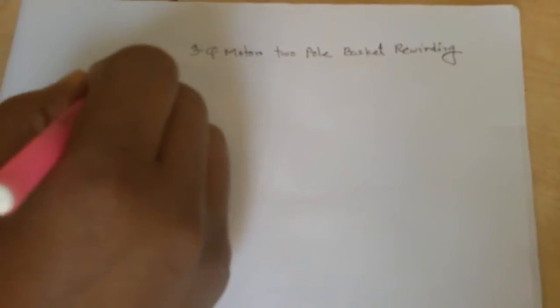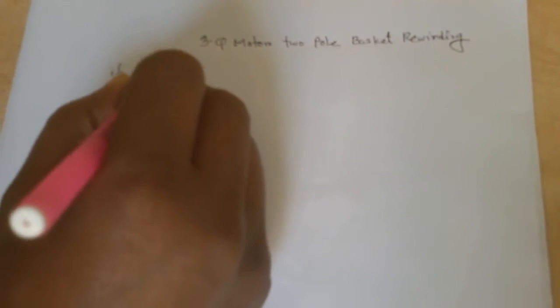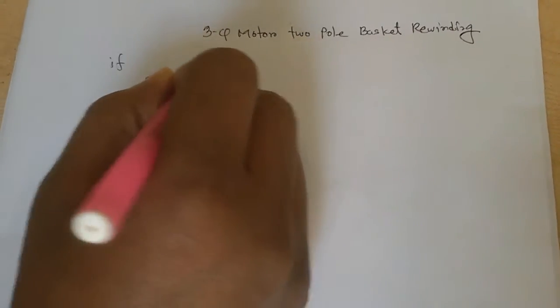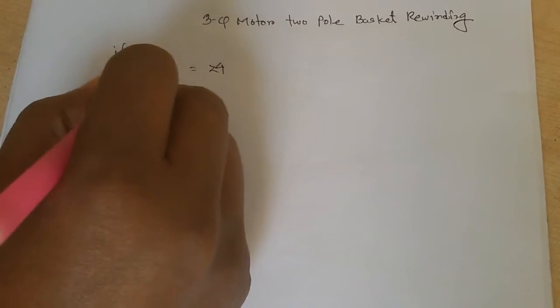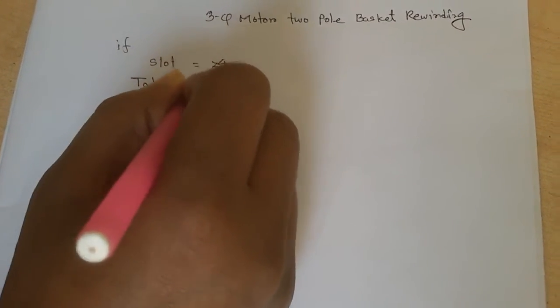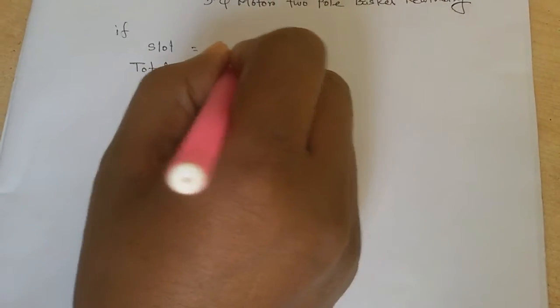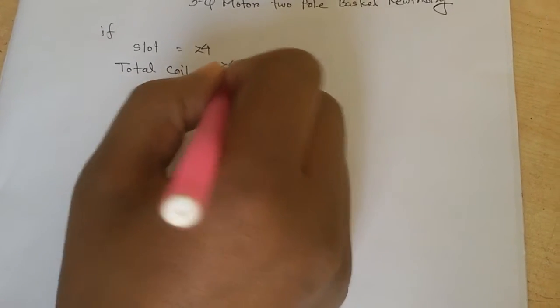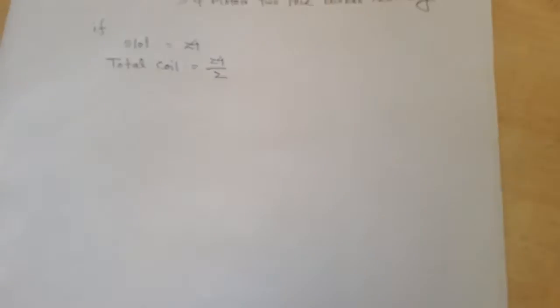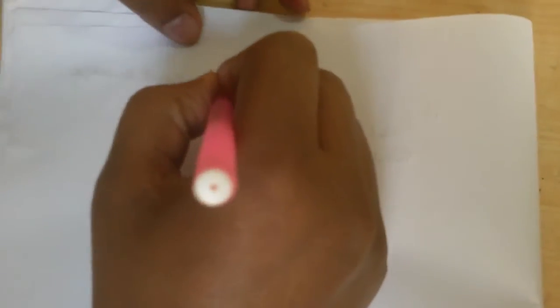If this motor has 24 slots, then total coil is 24 slots divided by 2. Here single layer. This rewinding is basket or single layer.